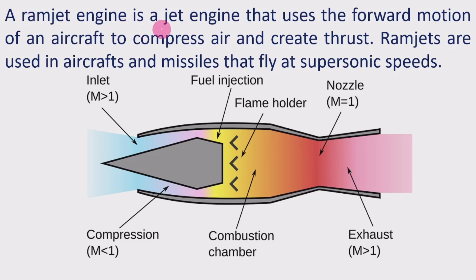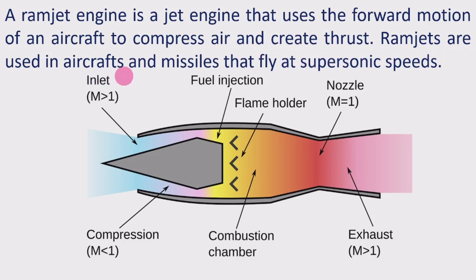A Ramjet engine is a jet engine that uses the forward motion of an aircraft to compress air and create thrust. Ramjets are used in aircraft and missiles that fly at supersonic speeds.